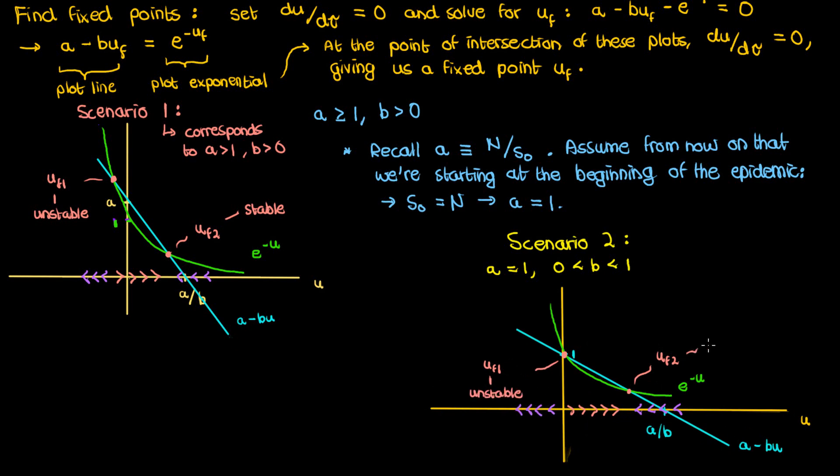It should be pretty easy to see that once again uf1 is an unstable fixed point since the flows tend to diverge from it while uf2 is a stable fixed point since the flows tend to converge towards it. What this means is that if I start with 0 dead people I'm going to stay at 0 dead people because u equals 0 is still a fixed point.